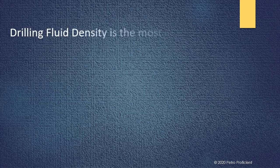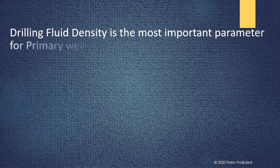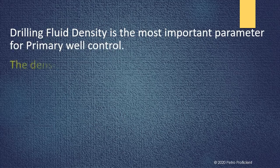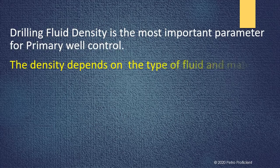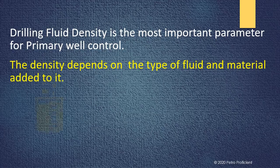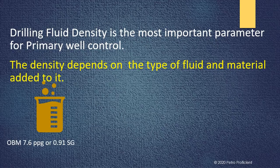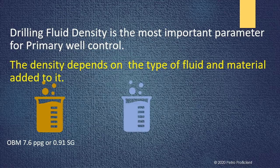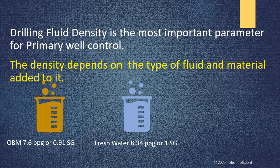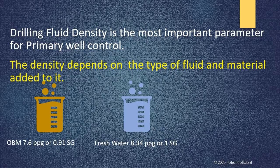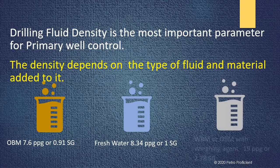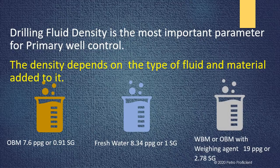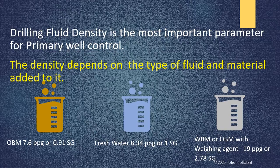Drilling fluid density is the most important parameter for primary well control. The density depends on the type of fluid and material added to it. For example, oil-based mud can be prepared to have a density of 7.6 ppg, or specific gravity of 0.91. Fresh water has a density of 8.34 ppg, or specific gravity of 1. Drilling fluid with weighing agents such as barite can have density up to 19 ppg, or 2.78 sg.